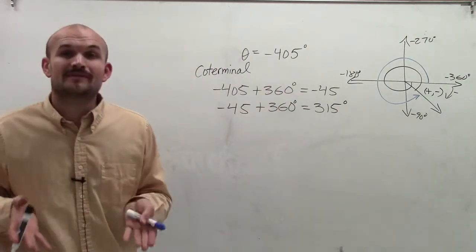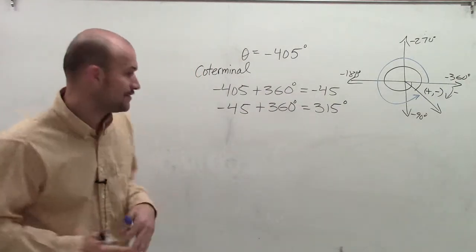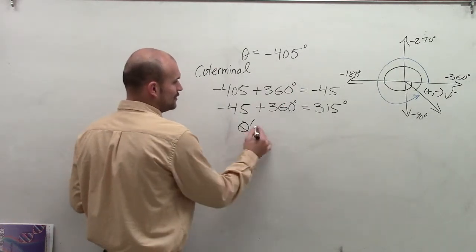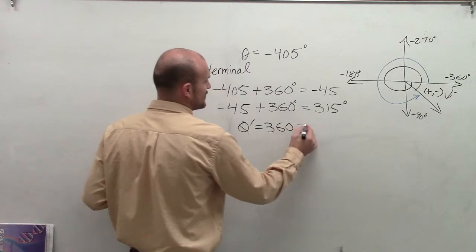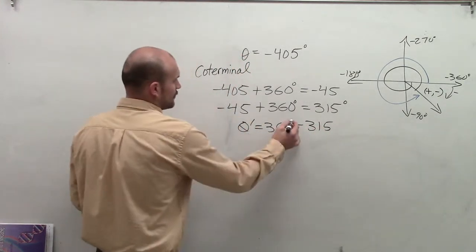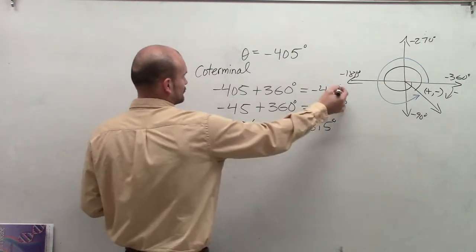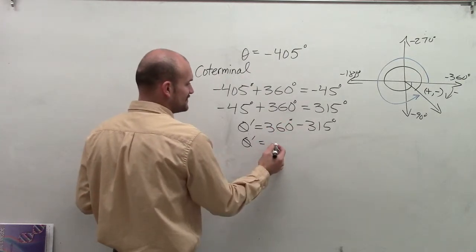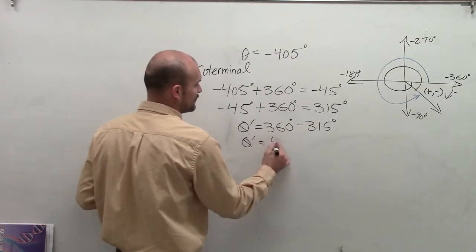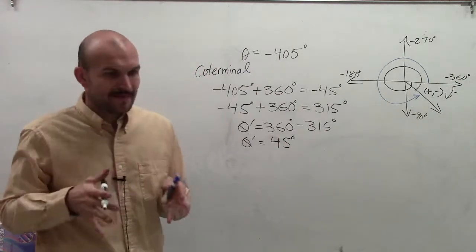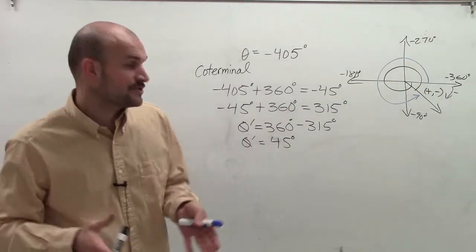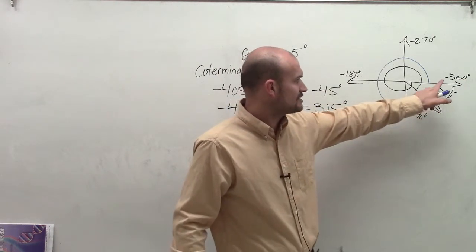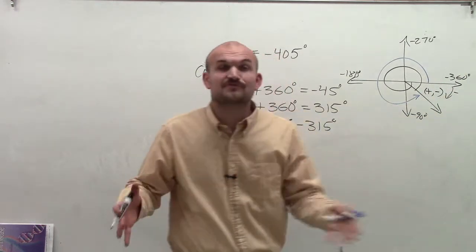Now I can use 315 degrees in my formula to find the reference angle. The formula to find a reference angle in the fourth quadrant is theta prime, your reference angle, equals 360 minus 315 degrees. Therefore, theta prime is going to equal 360 minus 315, which is a positive 45 degrees. So the reference angle — the acute angle from my terminal side to my horizontal axis — is 45 degrees.